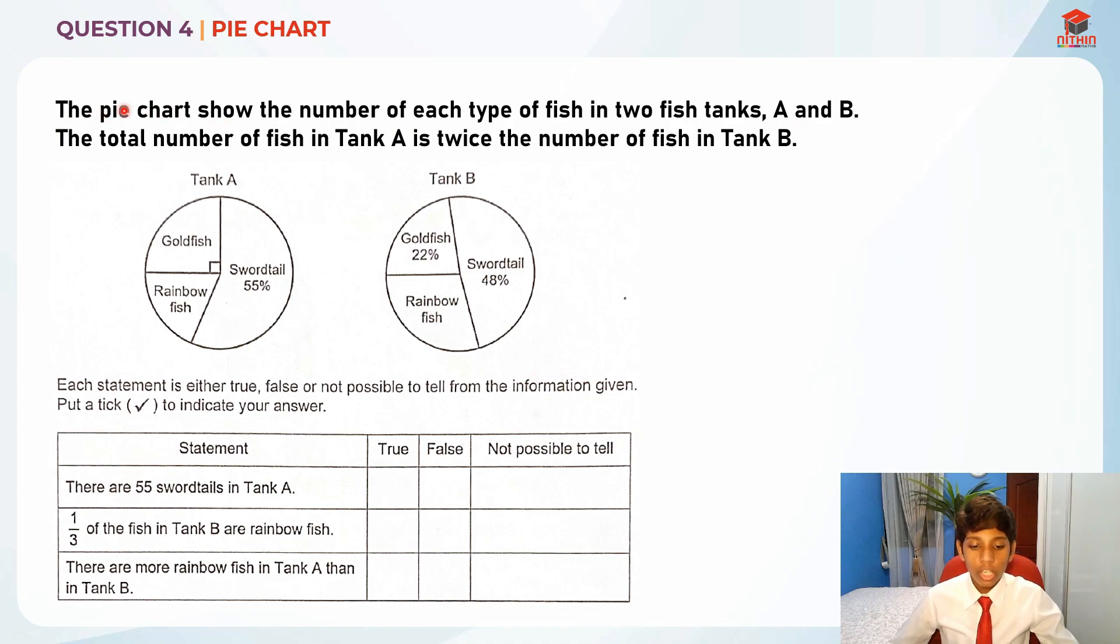The pie chart shows the number of each type of fish in two fish tanks A and B. The total number of fish in tank A is twice the number of fish in tank B. That's actually something really important, so let's highlight it. So A is to B is actually in the ratio of 2 is to 1.